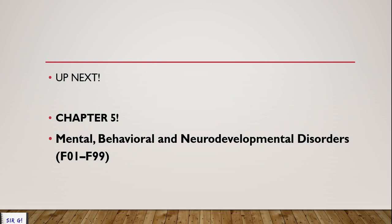In Chapter 5 of your ICD-10-CM 2020, we have mental, behavioral, and neurodevelopmental disorders from F01 to F99. This is a quick guidelines overview because there are just a few guidelines under Chapter 5 which are very important to discuss, as they will definitely ask at least one or two questions in the actual exam.